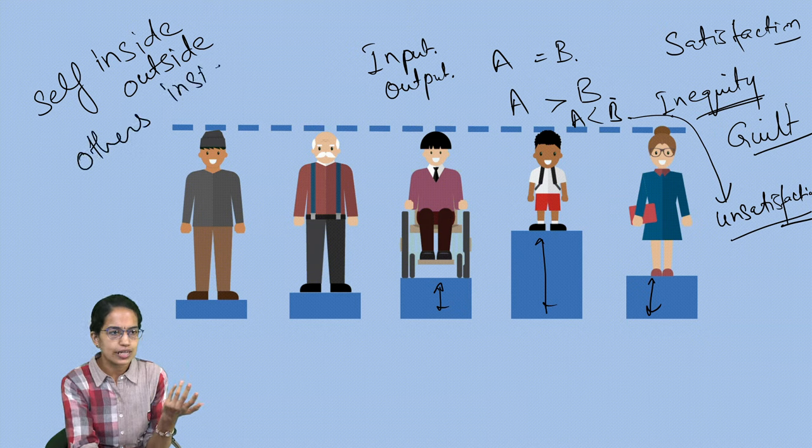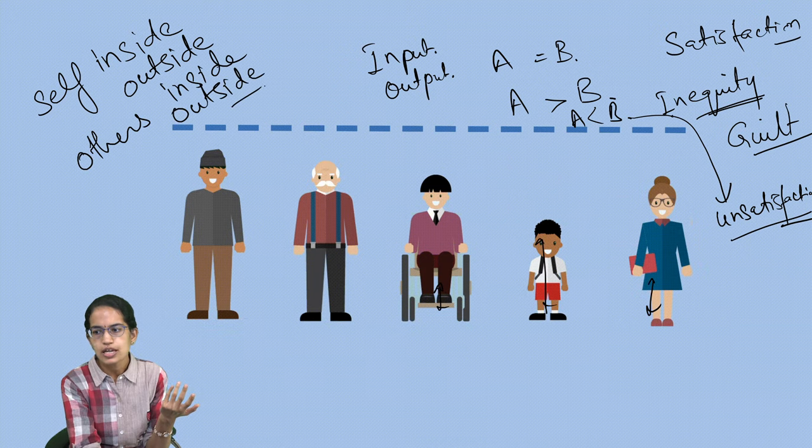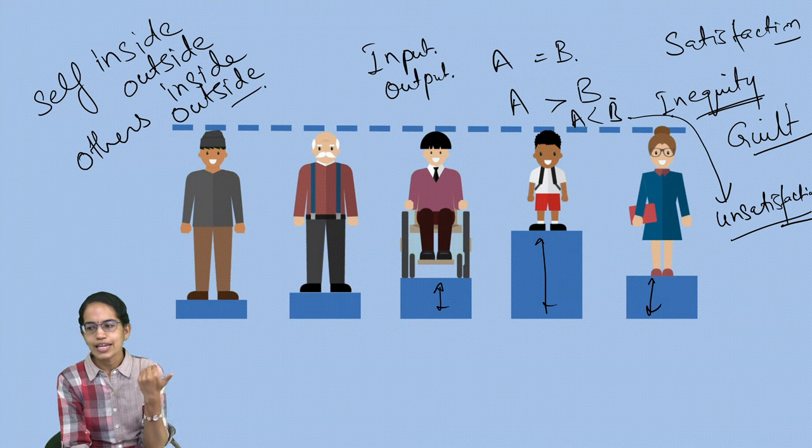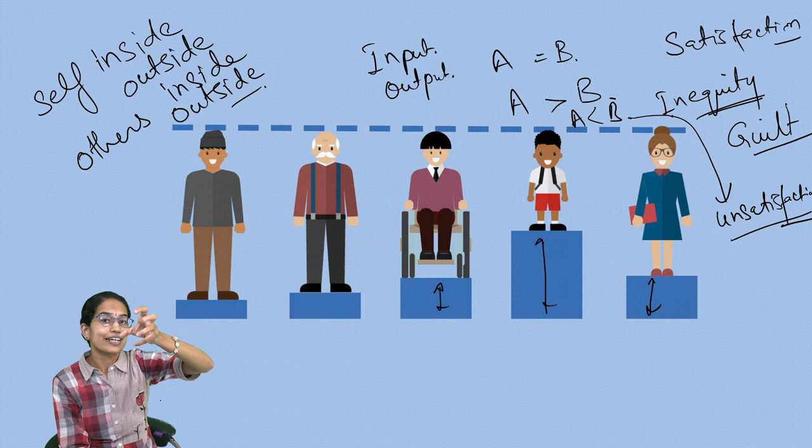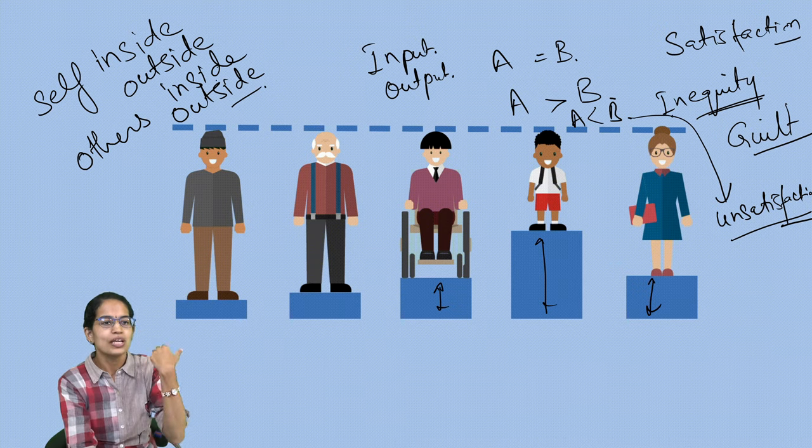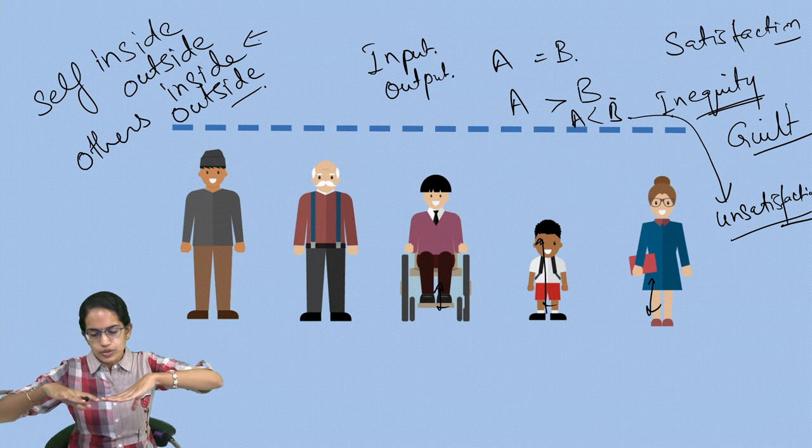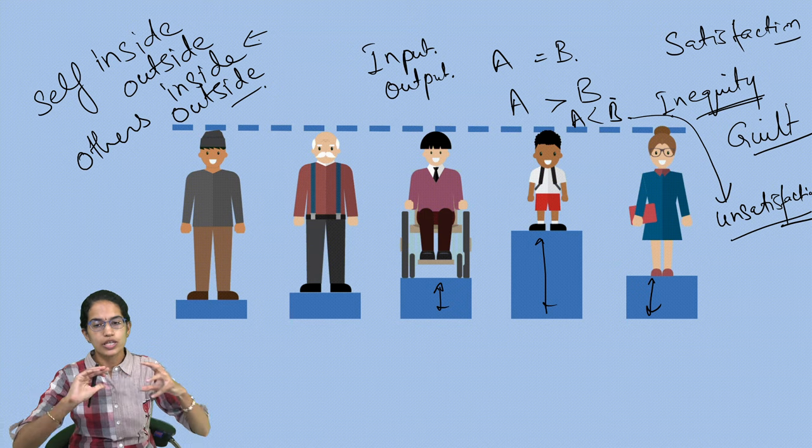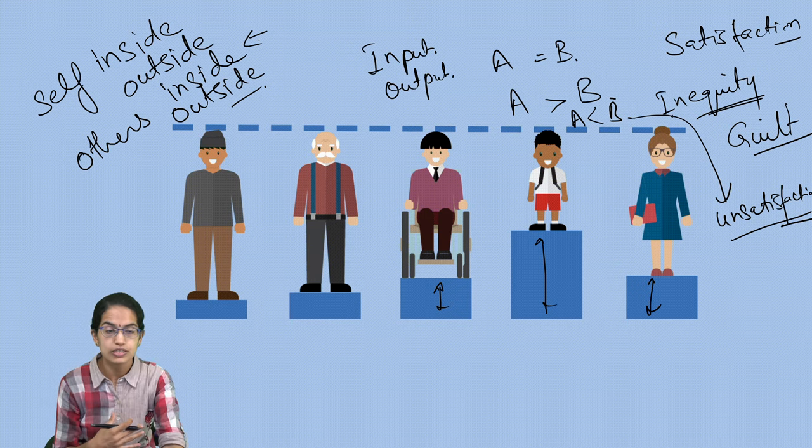And the next is others inside and others outside. Others outside are basically other group members. They can either help you restore to the level of equity or could create a feeling of distress for you. Others inside are the people within your group members. You would think that I am getting the reward versus they are getting the reward. There can be a feeling which can sometimes lead to a conflict situation.